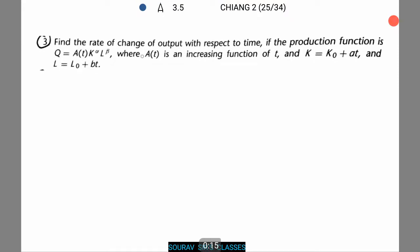We need to find the rate of change of output with respect to time. If the production function is given as Q equals A(t) K to the power alpha L to the power beta, where, mind it, A(t) is an increasing function of t. That is the value of A(t) keeps on increasing as the value of t increases. We are also given K equals K0 plus at and L equals L0 plus bt.